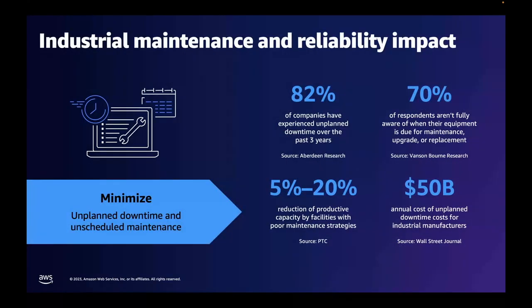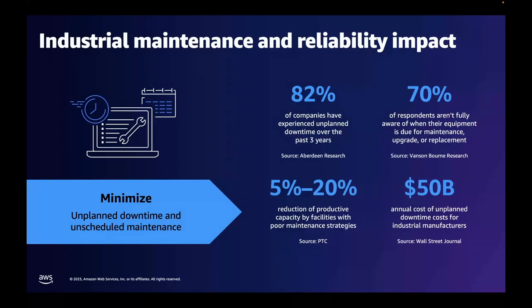The key metric of industrial maintenance and reliability impact is the ability to minimize any type of unplanned downtime and unscheduled maintenance. According to several industry sources, 82% of companies have experienced unplanned downtime over the past three years. 70% of respondents aren't fully aware of when their equipment is due for maintenance, upgrade, or replacement. There's about a 5% to 20% reduction of productivity by facilities with poor maintenance strategies. And $50 billion is the annual cost of unplanned downtime for industrial manufacturers.